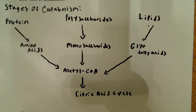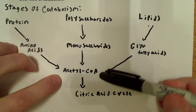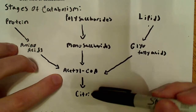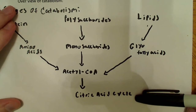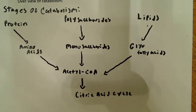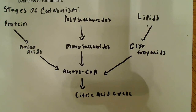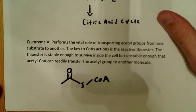Everything converges at acetyl-CoA, enters the citric acid cycle, which produces reduced electron acceptors. Those enter oxidative phosphorylation, where electrons are passed along the respiratory complexes in the inner mitochondrial membrane, generating somewhere between 30 and 32 ATP in aerobic respiration. That's an important big-picture concept.